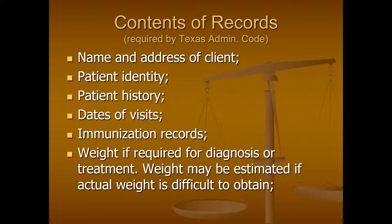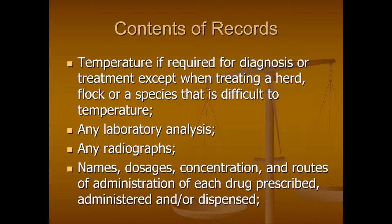Some of these are pretty obvious: include the name and address of the client, the patient's identity, the patient's history, and the dates of visits. Include immunization records — even though you're providing chiropractic care and not providing immunizations, it may be a good idea to ask about immunizations and confirm the animal has received all it should. Include weight if required for diagnosis or treatment; weight may be estimated if actual weight is difficult to obtain — for example, if you're working on cows out in the pasture there may not be a scale handy. Also include the animal's temperature if required for diagnosis or treatment, except when treating a herd, flock, or species that is difficult to take their temperature.